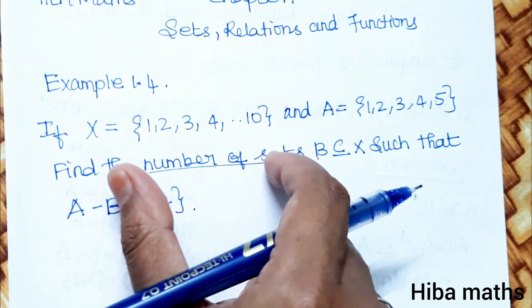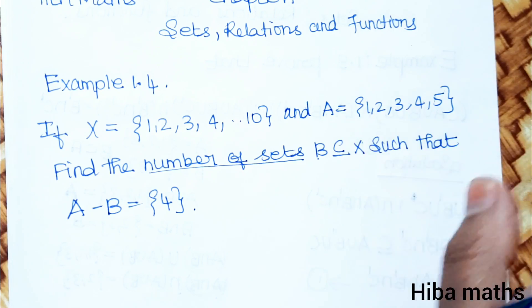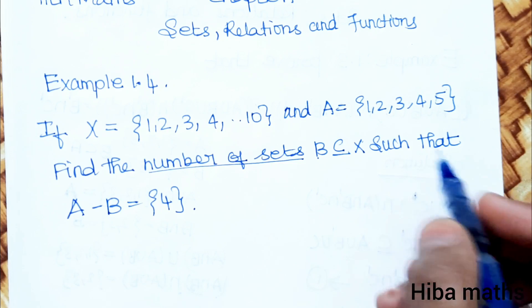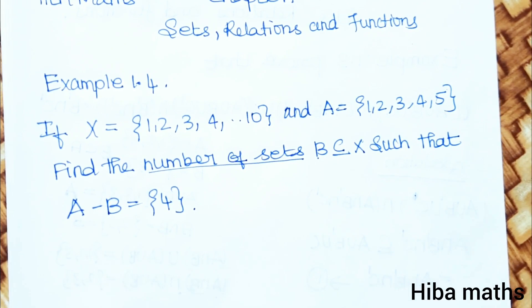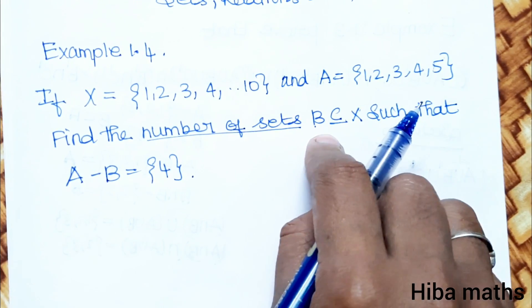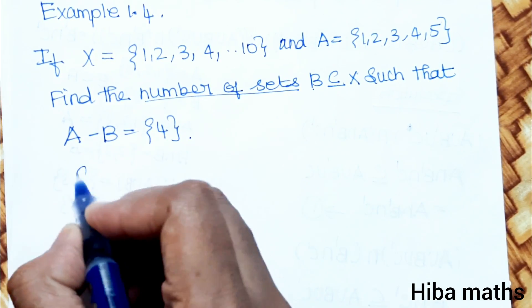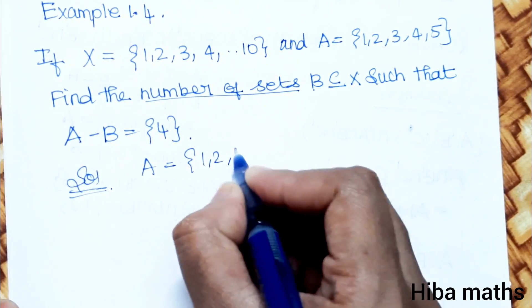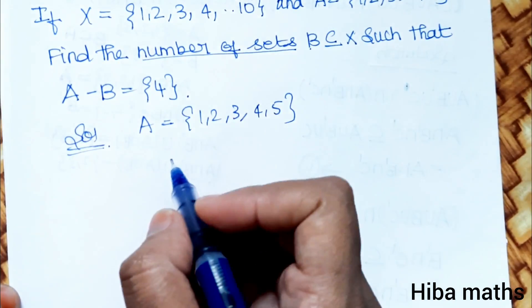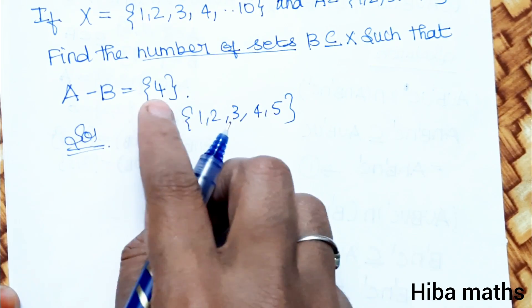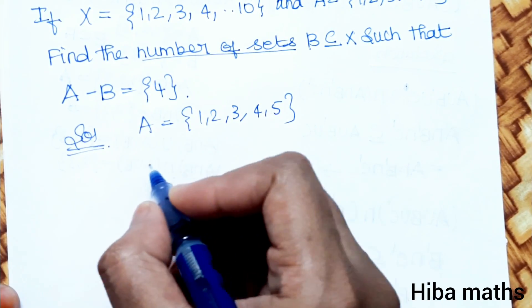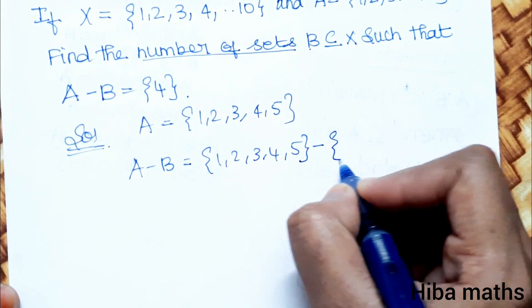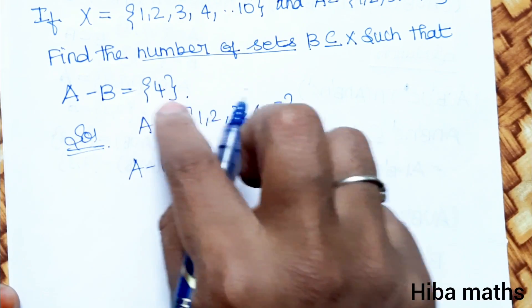Now, if you understand the question, X is a set and A is a set. If you have a subset B, then the subset of X. So when A minus B is equal to {4}, we need to find how many B sets are possible. You can keep it simple. Now, if you choose A first, A is equal to {1, 2, 3, 4, 5}. Now we know B and how to get 4.